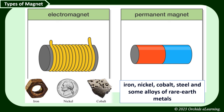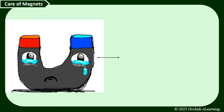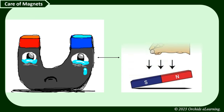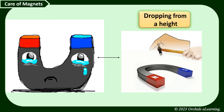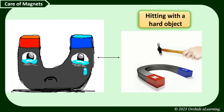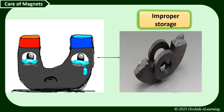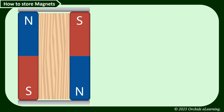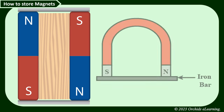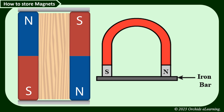A magnet can lose its properties due to many reasons, such as dropping from a height, hitting with a hard object like a hammer, applying heat, or improper storage. Bar magnets should be stored in pairs with unlike poles alongside each other. A horseshoe magnet should be stored with a piece of soft iron kept across its poles.